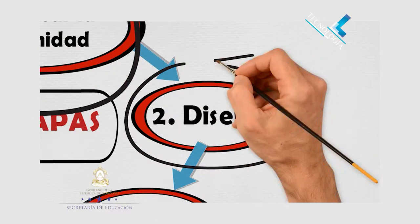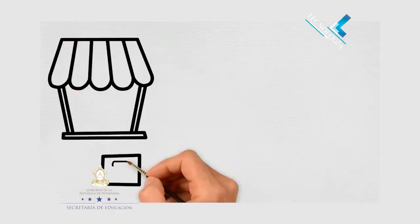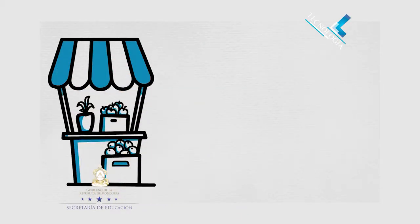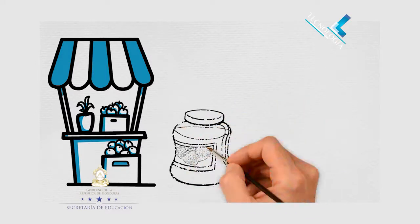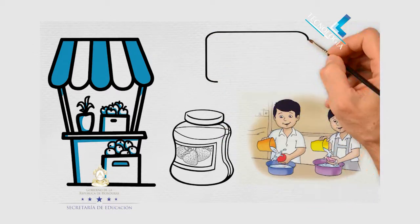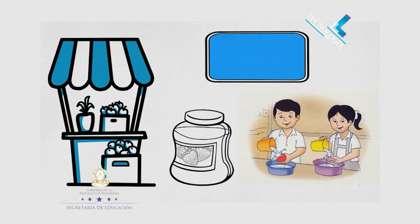La segunda etapa es el diseño. Ya que se ha detectado la oportunidad presentada y se tiene la materia prima, el segundo paso es diseñar. ¿Cuál será la presentación? ¿Cómo se elaborará? ¿Cómo se hará la distribución del producto?